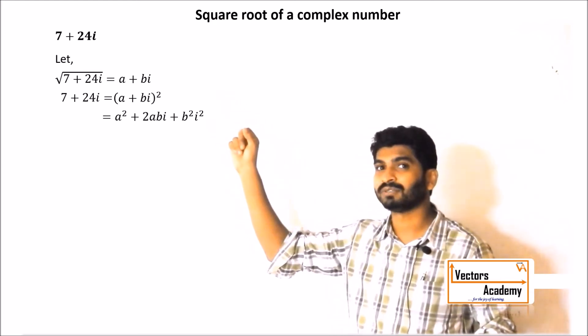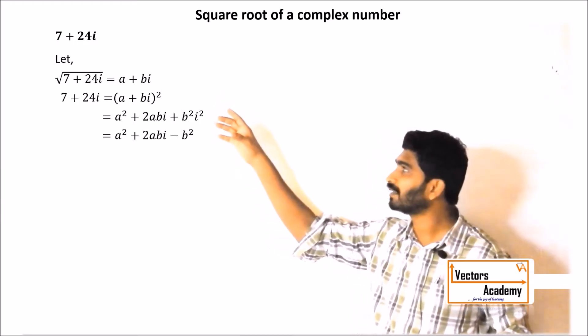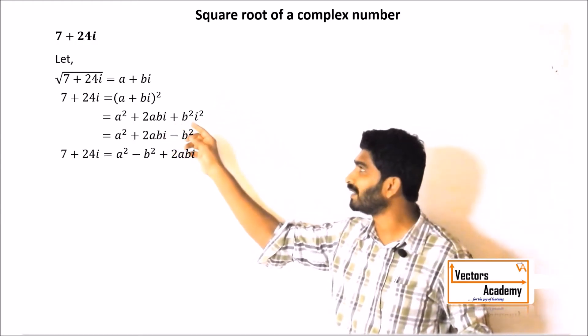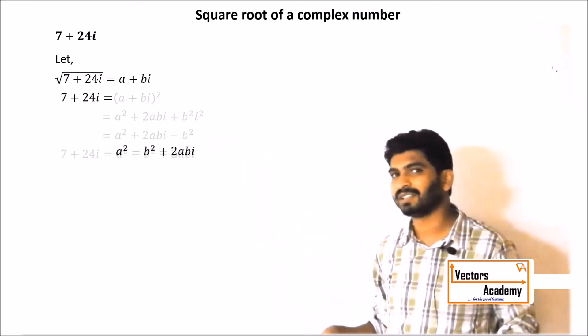Remember the value of i² is minus 1, so it will be minus b². We get a² minus b² which is the real part, whereas 2abi is the imaginary part.